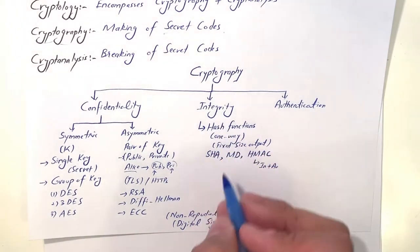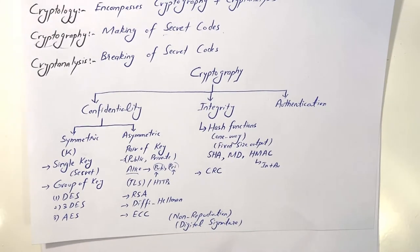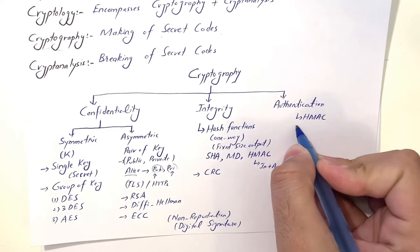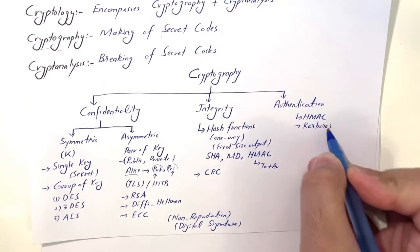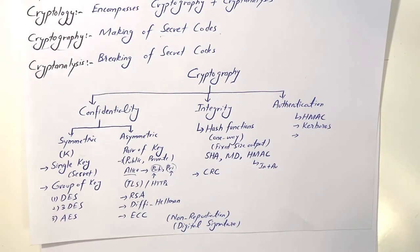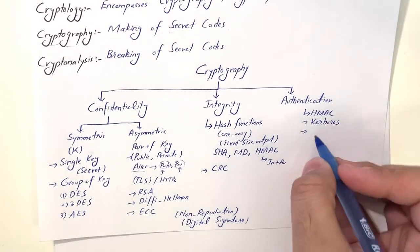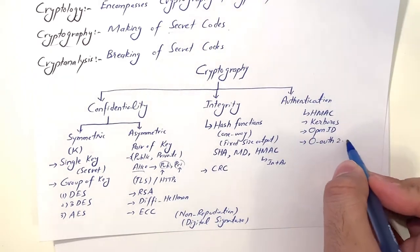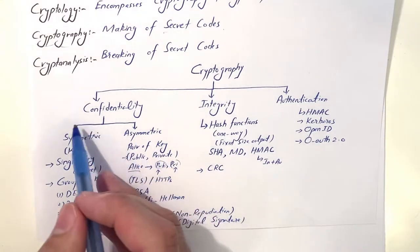For integrity, some also use CRC — Cyclic Redundancy Check. For authentication, besides HMAC, there are dedicated authentication schemes like Kerberos, which is used for web authentication — typically when a company uses multiple vendor products. Other authentication schemes include OpenID and OAuth 2.0, which is currently widely used. We will discuss all of these when we reach the authentication section.